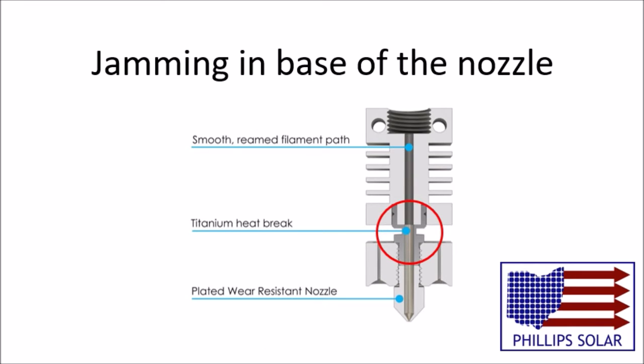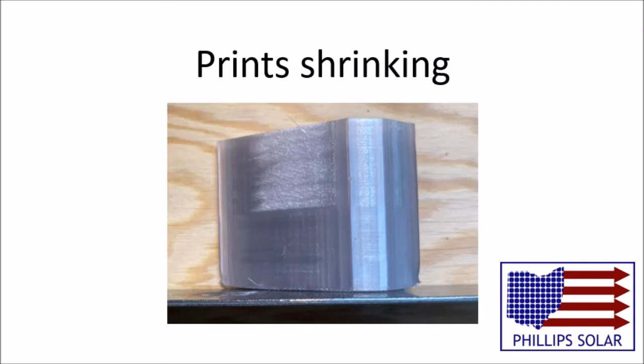If it jams at the base of the nozzle, it is most likely occurring at the heat break between the heater block and the cooling block. If this is the case, your prints may experience warping and shrinking around the corners before it jams. This is due to too high a print temperature.